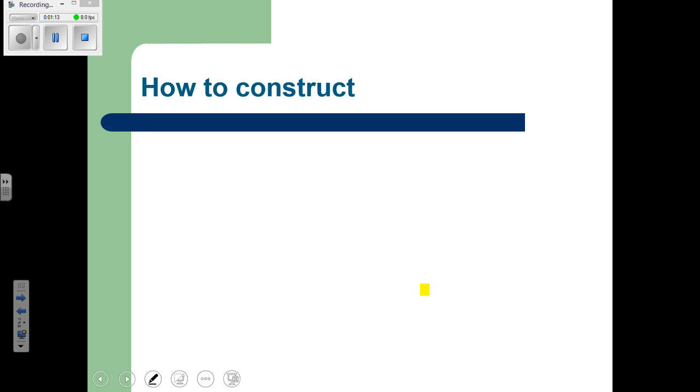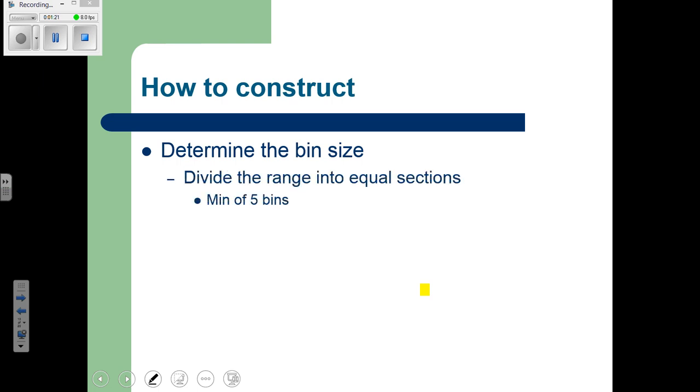So moving forward, in terms of constructing a histogram, what we want to make sure is that the data is spread out enough where we can really start to see some patterns. So what we're going to do is make sure that we construct equal sections. Minimum of five bins, and really what that's going to allow us to do is spread the data out enough where we can really see what's happening. We can start to get an idea of some of those shapes and the outliers that might be present. We can start to talk about the center and the spread a little bit easier.